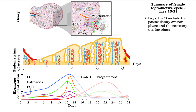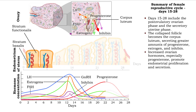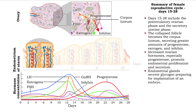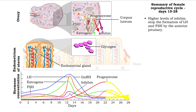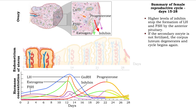During days 15 through 28, the post-ovulatory and secretory phases of the ovarian and uterine cycles, the ruptured follicle collapses and reforms to become the corpus luteum. The corpus luteum secretes estrogen and larger amounts of progesterone, causing the endometrium of the uterus to further thicken. Glycogen is secreted from the endometrial glands to prepare for a possible embryo. Increased secretion of inhibin hormone signals the anterior pituitary to decrease secretion of FSH and LH. If the secondary oocyte is not fertilized, the corpus luteum disintegrates, and the cycle begins again.